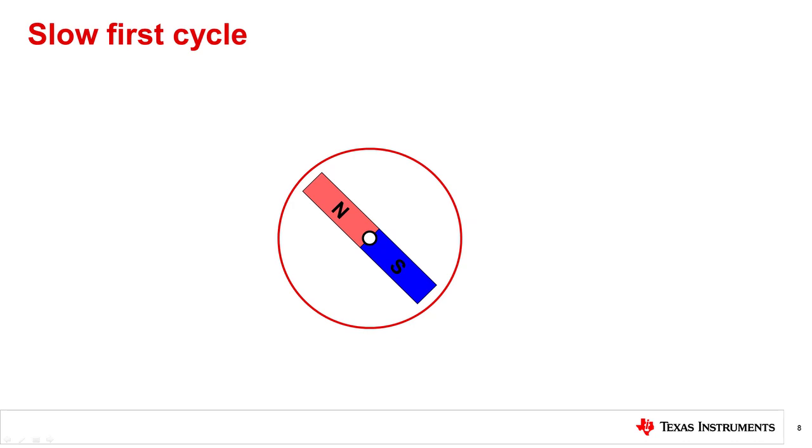This animation demonstrates the basic operation of Slow first cycle. When the Align vector slowly rotates around in circle, the rotor catches up with the rotating field and remains aligned and moving in sync with the Align vector by the end of the first cycle.